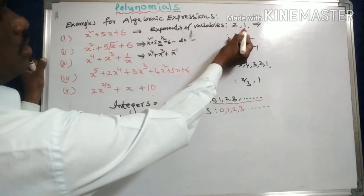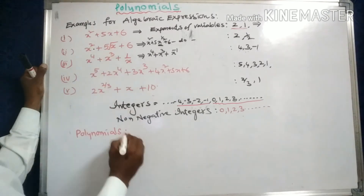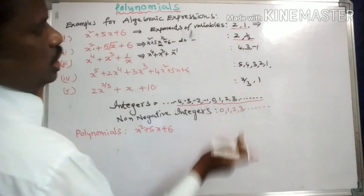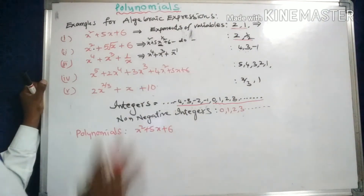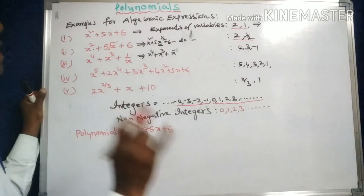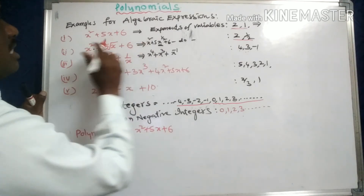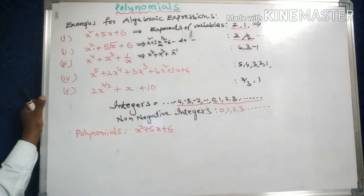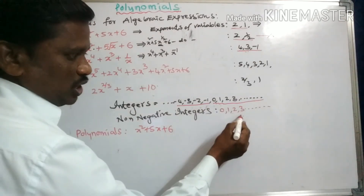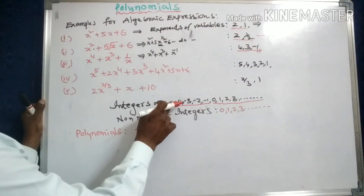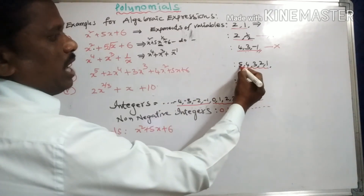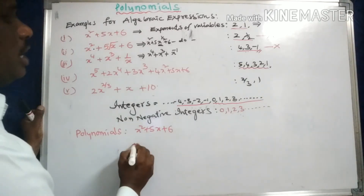Looking at our examples: the first one — x squared plus 5x plus 6 — has exponents 2 and 1, which are non-negative integers, so it is a polynomial. The second one has exponent 1 by 2, which is not an integer but a rational number, so it is not a polynomial. The third one has exponents 4, 3, and minus 1; since minus 1 is a negative integer, it is not a polynomial. The fourth one — x to the power 5 plus 2x to the power 4 plus 3x cubed plus 4x squared plus 5x plus 6 — has exponents 5, 4, 3, 2, 1, which are all non-negative integers, so it is a polynomial.